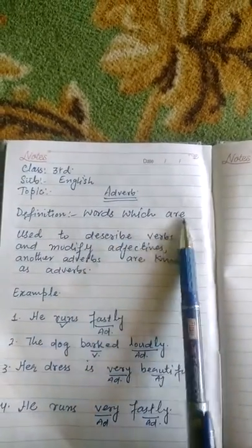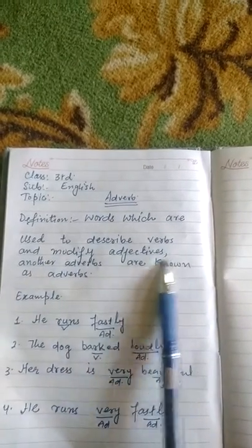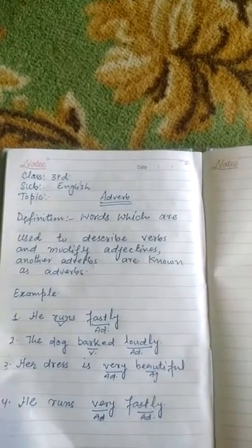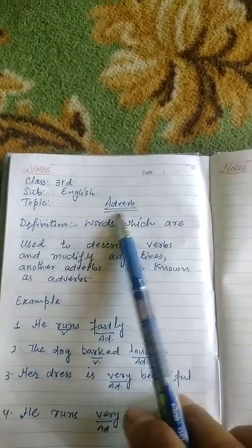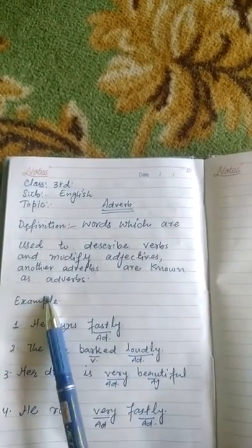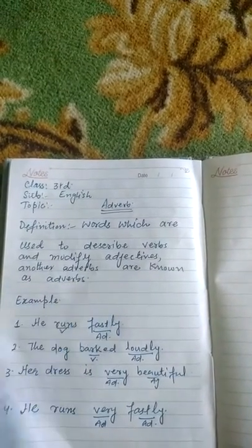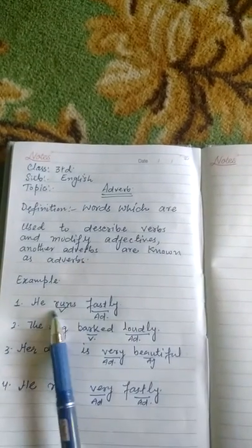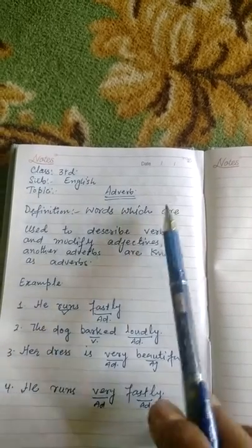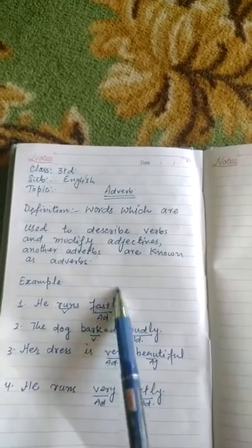Adverbs are words which are used to describe verbs and modify adjectives. For example, he runs fastly — here 'fastly' describes the verb.